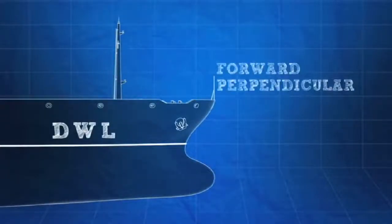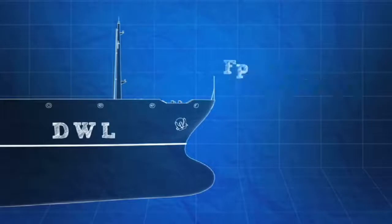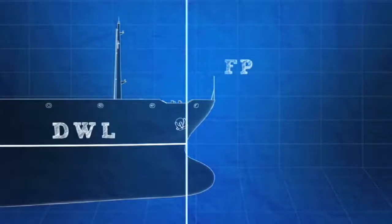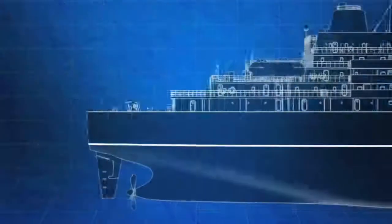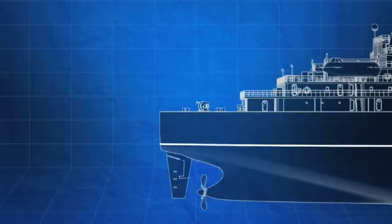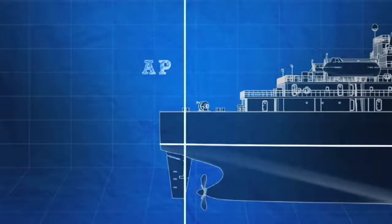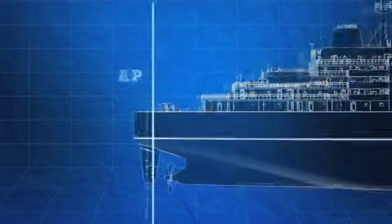The forward perpendicular, or FP, is a vertical line drawn at the intersection of the design waterline and the foreside of the stem of the hull. The after perpendicular, or AP, is a vertical line drawn at the intersection of the design waterline and the aftmost point of a ship's hull.